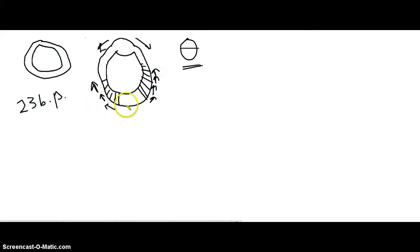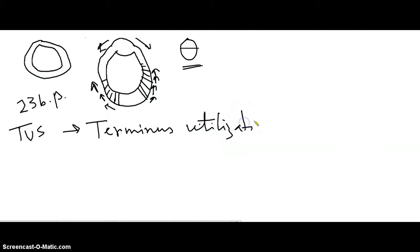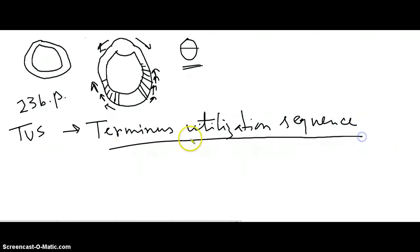The termination sequence is recognized by a specific protein known as TUS protein — that is, Terminus Utilization Sequence protein. In combination with the TUS sequence and the TUS protein, termination of replication occurs in the prokaryotic replication process.